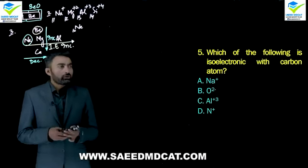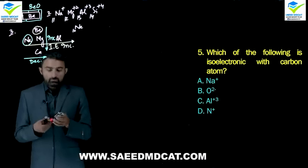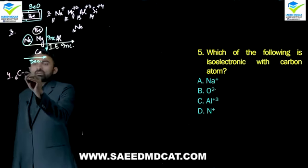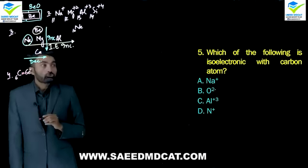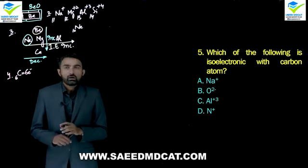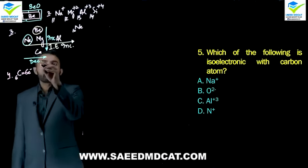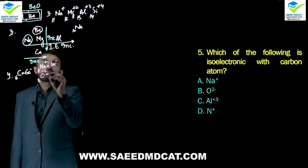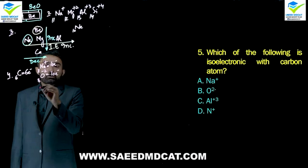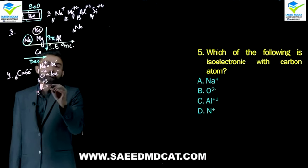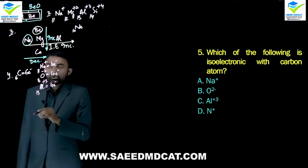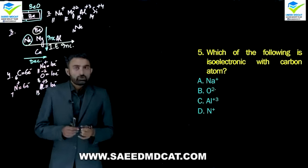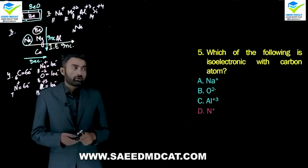Question 5: Which of the following is isoelectronic with a carbon atom? Carbon has atomic number 6, so it has 6 electrons. Sodium (atomic number 11) is far away. If sodium becomes Na+, it has 10 electrons. Oxygen (atomic number 8) as O2- also has 10 electrons. Aluminium (atomic number 13) as Al3+ also has 10 electrons. The answer is nitrogen N+, because nitrogen has atomic number 7, and losing one electron gives it 6 electrons — isoelectronic with carbon. Delta option.